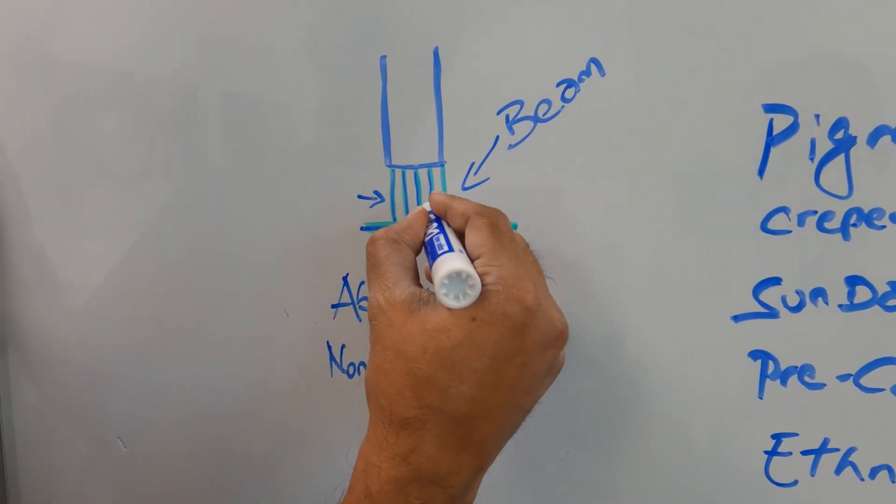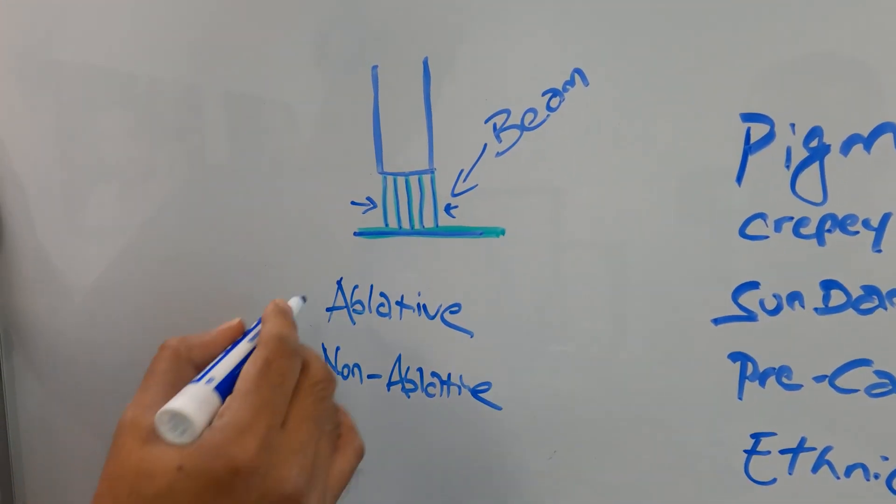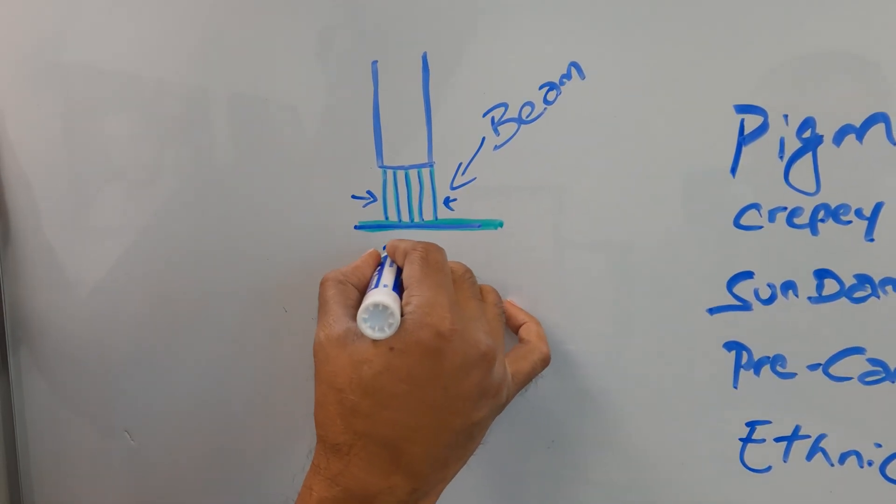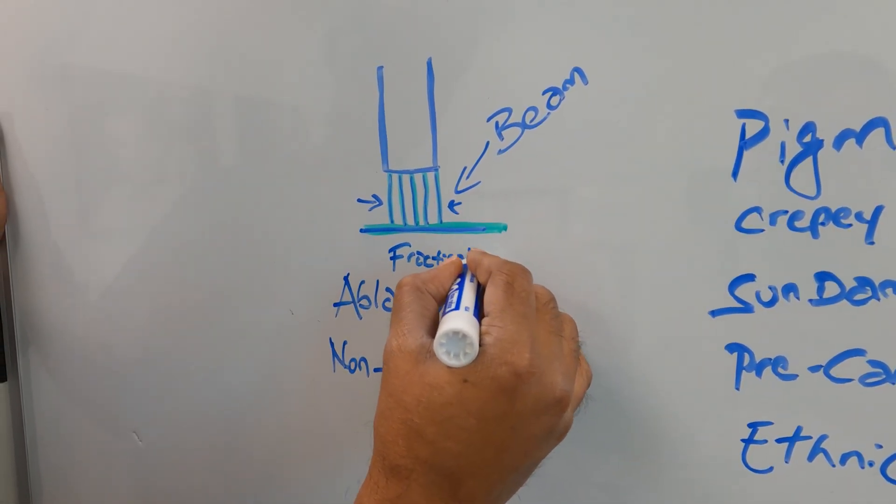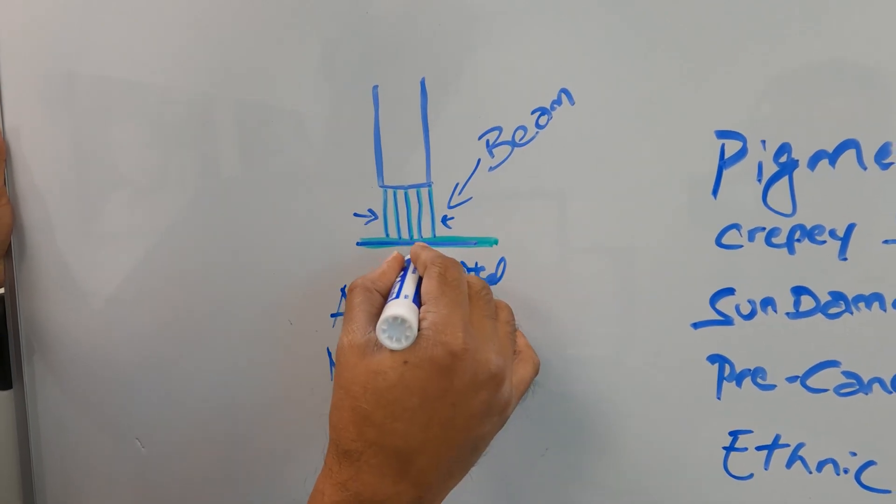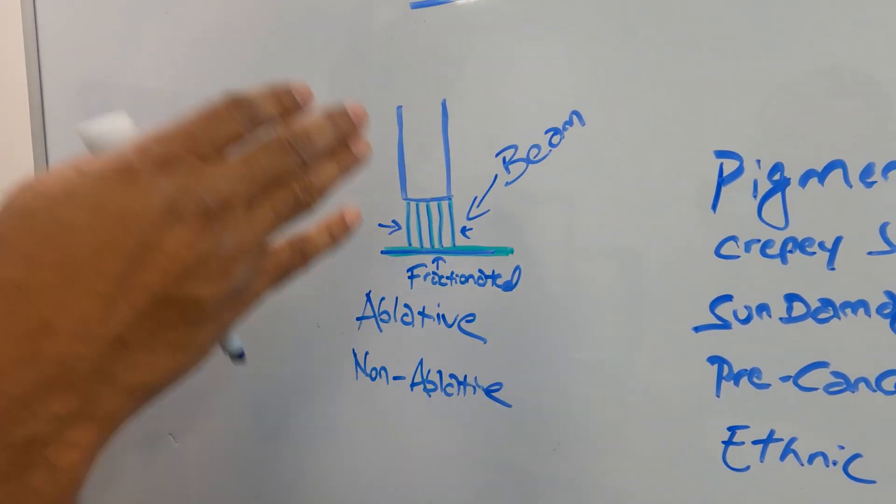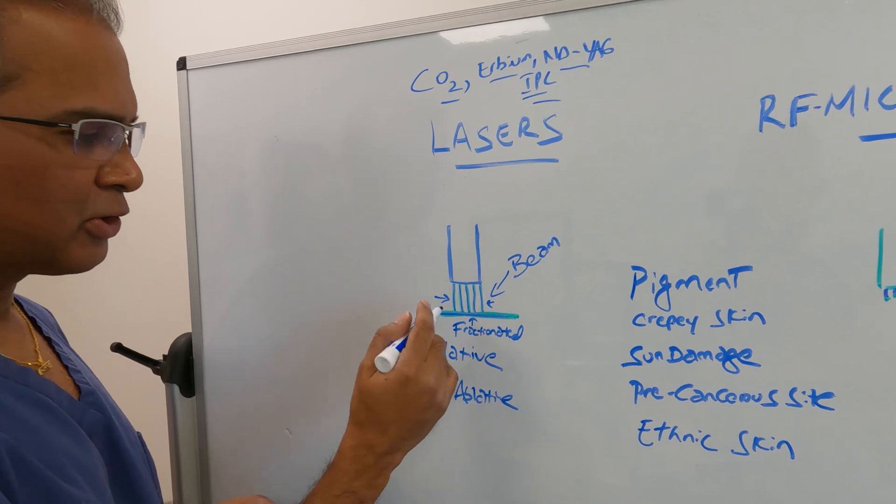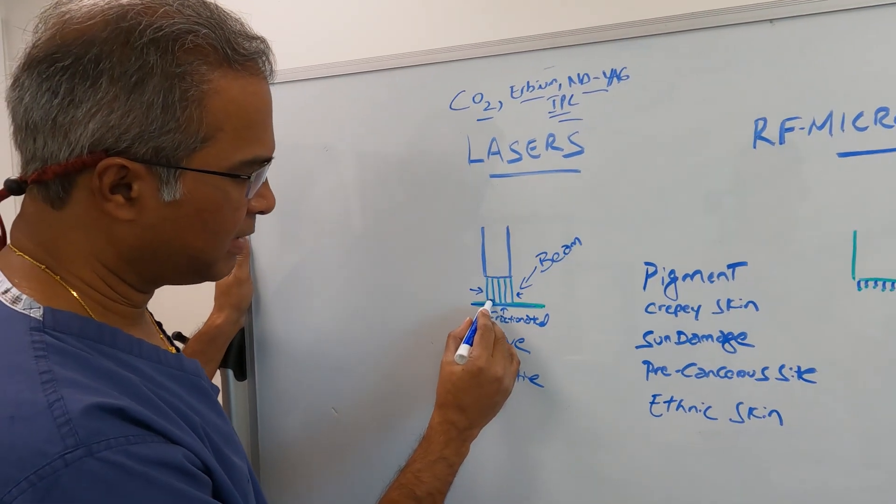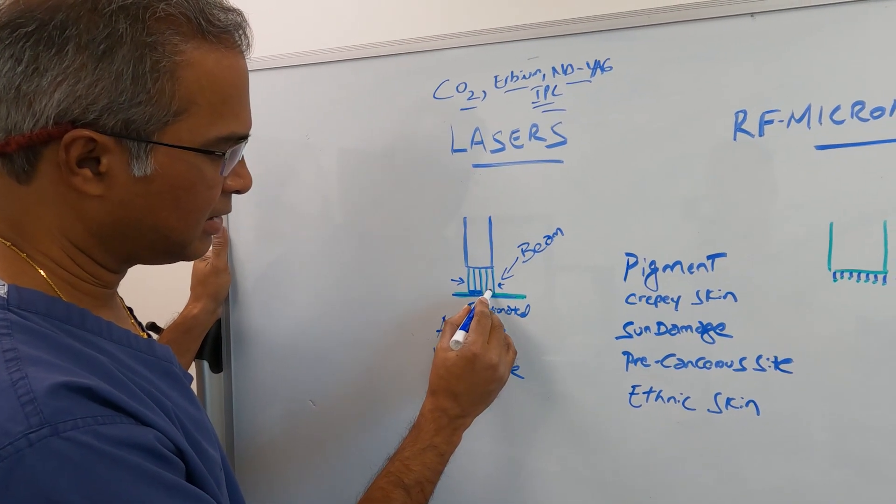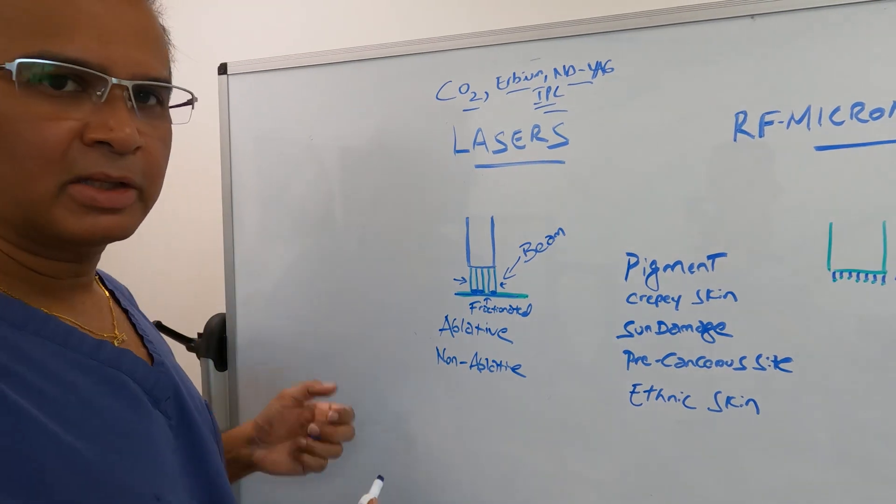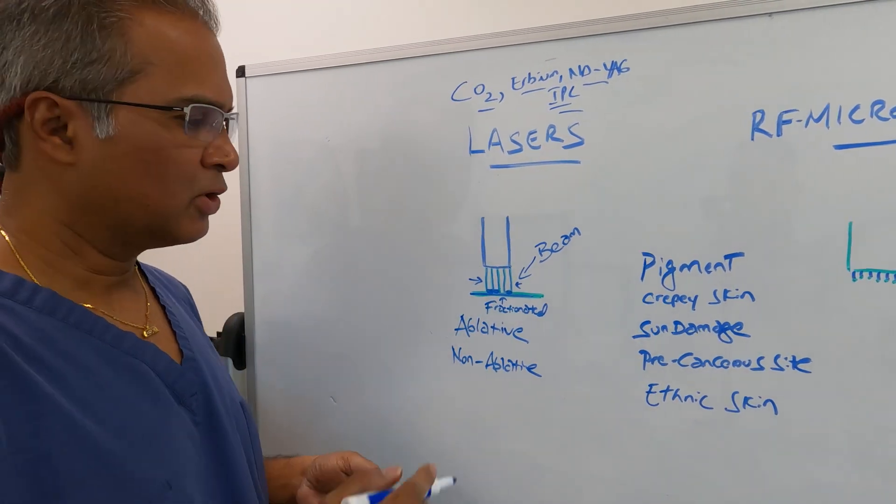Ablative essentially means if you look here, I have created columns. You could see individual lines like this. So this is called fractionated. When the beam is fractioned into various columns, you're sparing this skin in between the beams.